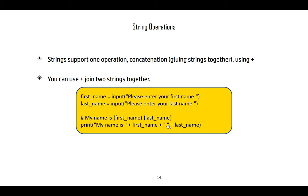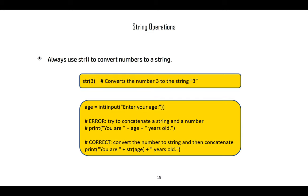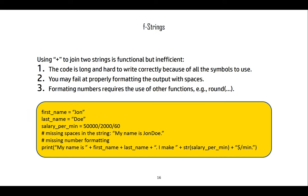We always need to use str() to convert numbers to a string before doing any concatenation. For example, if we take the age as input and convert it to an integer, we cannot concatenate that integer age directly to a string — we need to reconvert the age back to a string using the str() function.